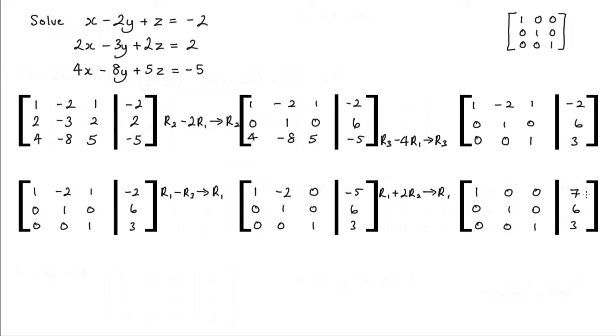So now we have the solutions to these three simultaneous equations in that x is equal to 7. We've got y is equal to 6. From this one here, y is equal to 6. And obviously z is equal to 3.